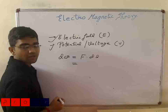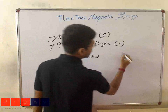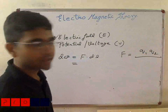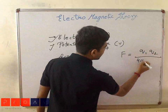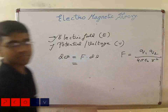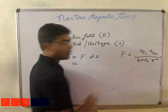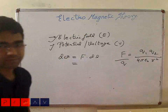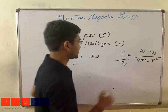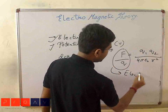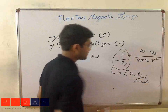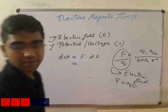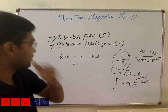What is force? We have studied in plus-two that force is the electrostatic force of attraction between two particles q1 and q2, given by q1·q2 / (4πε₀r²). We know force per unit charge gives the electric field E. Therefore, force is nothing but charge Q multiplied by electric field E.